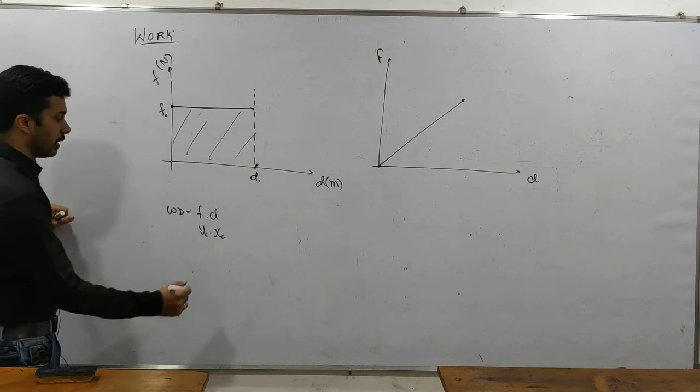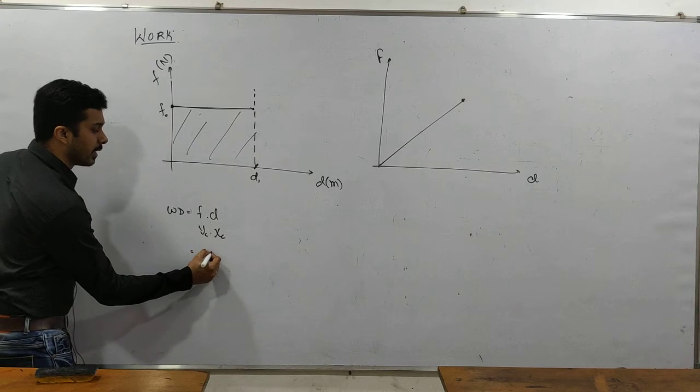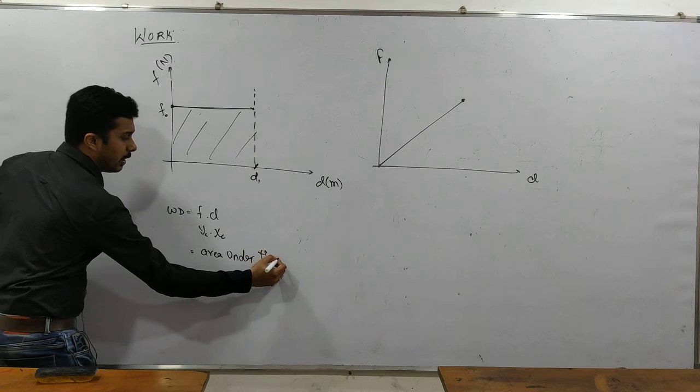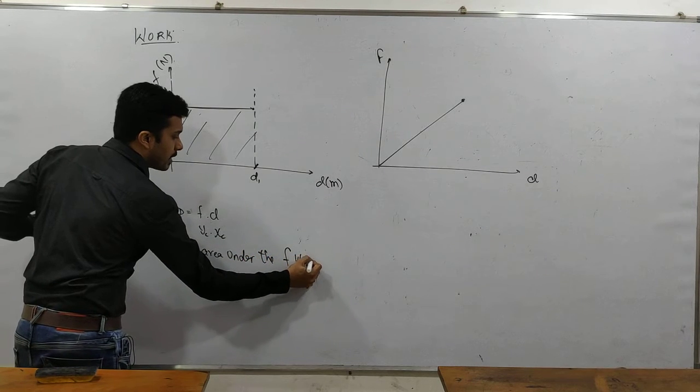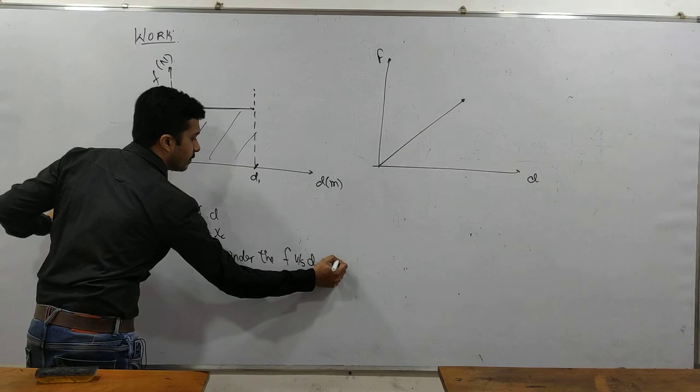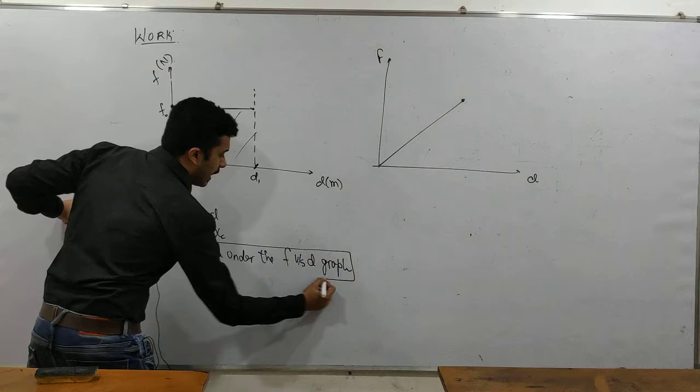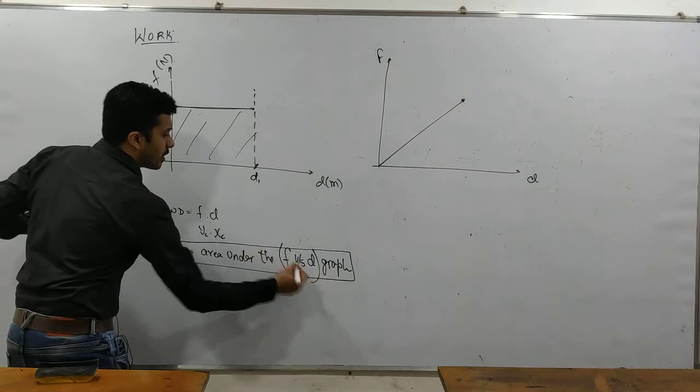It tells us that force is nothing but area under the force versus displacement graph. What do we understand? That the work done is area under which graph? Force versus displacement graph.